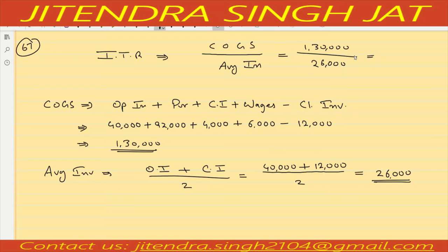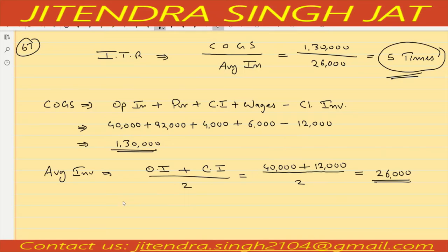1 lakh 30,000 divided by 26,000 equals 5 times. Inventory turnover ratio is 5 times. Remember: more the ratio, better the condition of the business — this is the purpose of activity ratio.